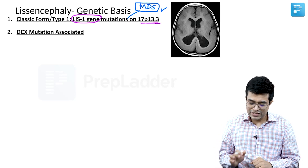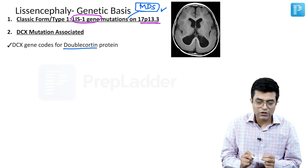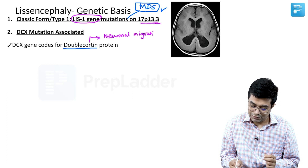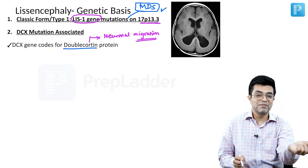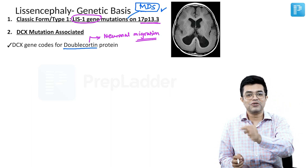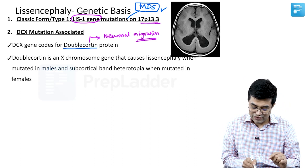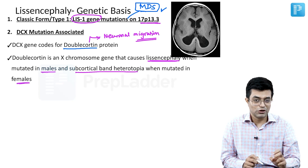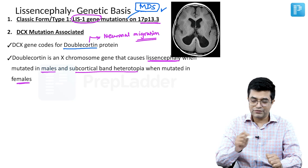The second variety is DCX mutation-associated lissencephaly — it is an X-linked disorder. The DCX gene codes for a protein called doublecortin, which is involved in neuronal migration. Absence of this protein causes lissencephaly, but importantly, DCX mutation causes lissencephaly only in males. In females, it produces subcortical band heterotopia. So, gender decides what kind of brain disorder the child has if there is a mutation in DCX.